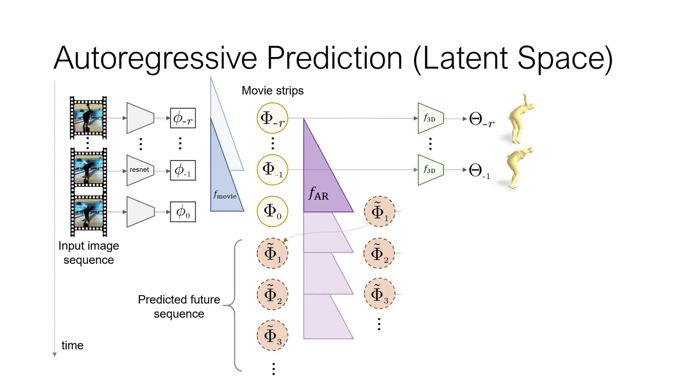From the predicted movie strip sequences, we can also read out the 3D mesh parameters. This autoregressive model is trained with the same losses, where the predicted 3D mesh model has to match the ground truth 3D or 2D joint labels along with the prior.